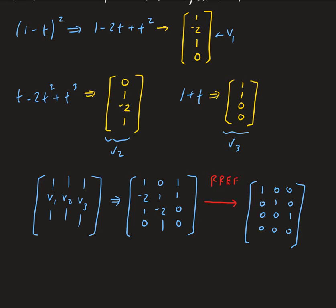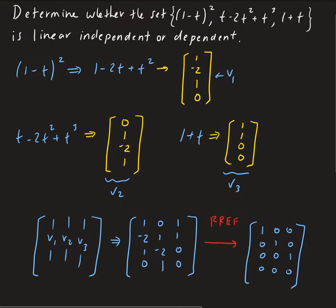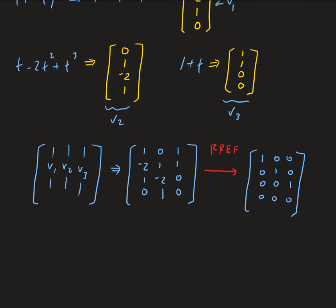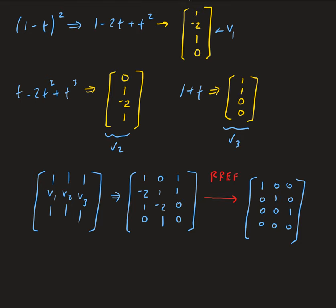So therefore, that implies that vectors v1, v2, and v3 are linearly independent. So therefore, the set of polynomials is linearly independent. And this is based on using the idea of the isomorphism property. We took each polynomial and mapped them onto vectors, and then based on that we did the REF. And from there we can see that these are linearly independent. So therefore, the set of polynomials that we have here are linearly independent.